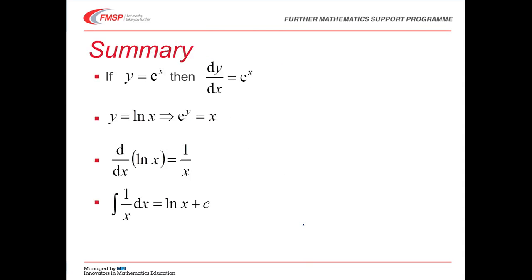So, here we go. This is what we found about e^x and natural log. If y is equal to e^x, then dy/dx is e^x. It doesn't change. If y is the natural log of x, that's the same as saying e^y is equal to x. And if we differentiate natural log, we get 1 over x. That means that by the fundamental theorem of calculus, which tells you that integration is the reverse of differentiation, the integral of 1 over x is the natural log of x plus constant. So, now you can integrate that annoying x to the minus 1, which was the 1 power of x that you couldn't integrate before.